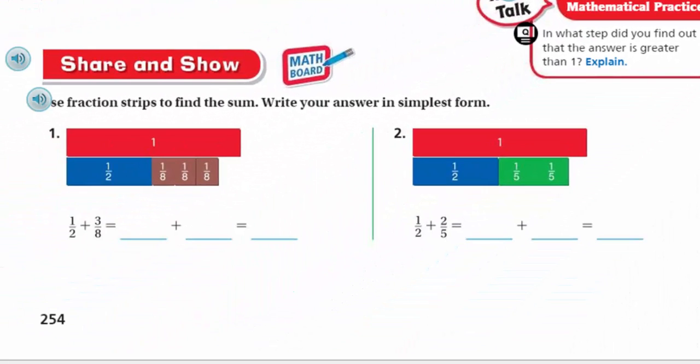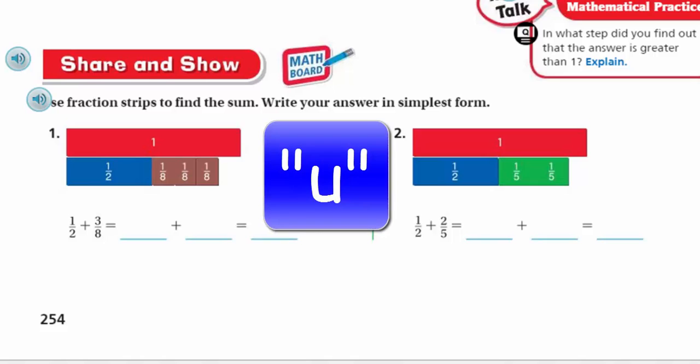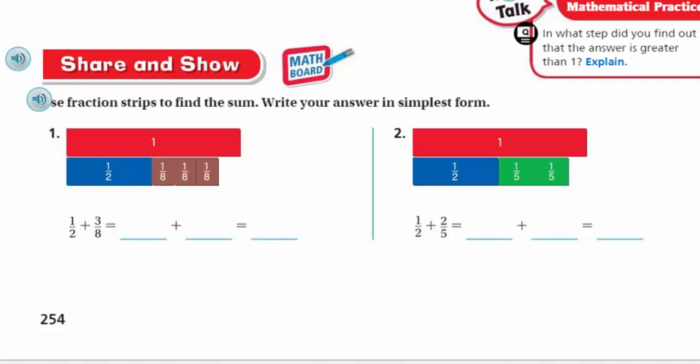All right. Now it's time for sharing show. Time for the old math board. We're going to use fraction strips to find the sum, and then you're going to write your answer in simplest form. A great opportunity for you guys to go ahead and put the video on pause. That's right. Give it a break. Just hit the old pause button, and then work those problems out, and then when you're ready, just hit play. Sounds good to me. All right. When problem one, it does show our fraction strips. We have that one whole strip, and then we have the other fraction strips listed, and it says one-half plus three-eighths.